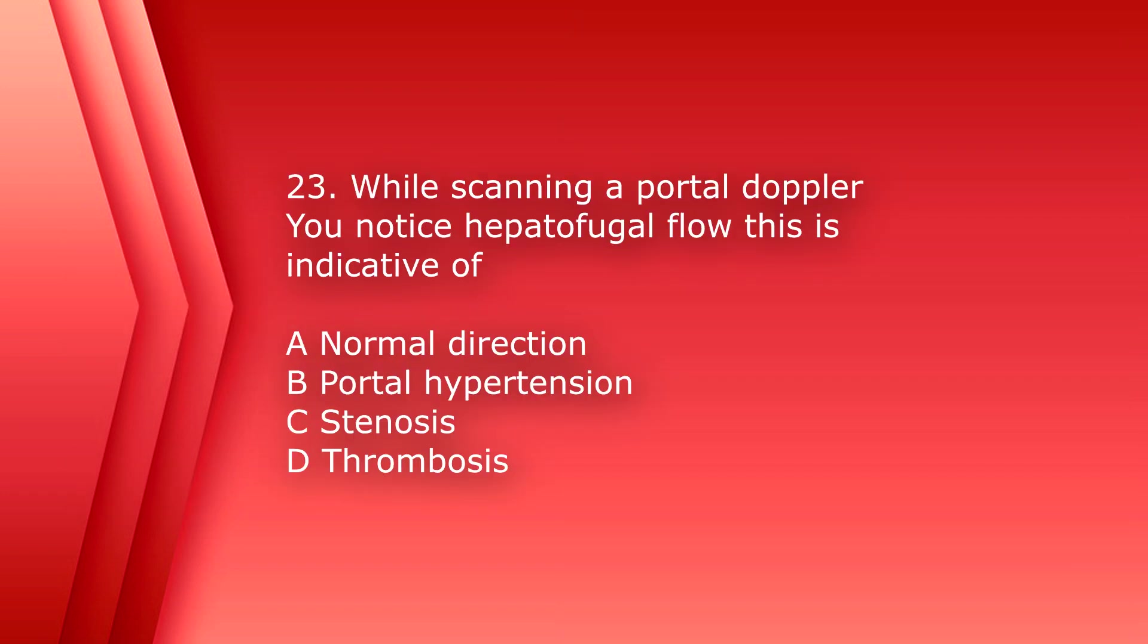Number 23. While scanning a portal doppler, you notice hepatofugal flow. This is indicative of A, normal direction, B, portal hypertension, C, stenosis, or D, thrombosis. The answer is B, portal hypertension.